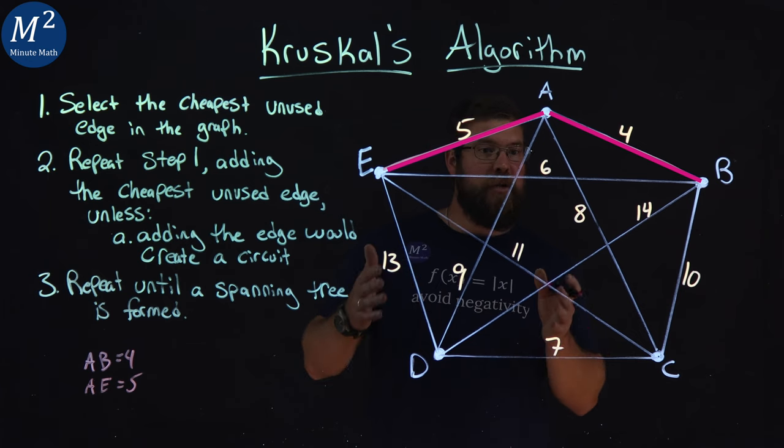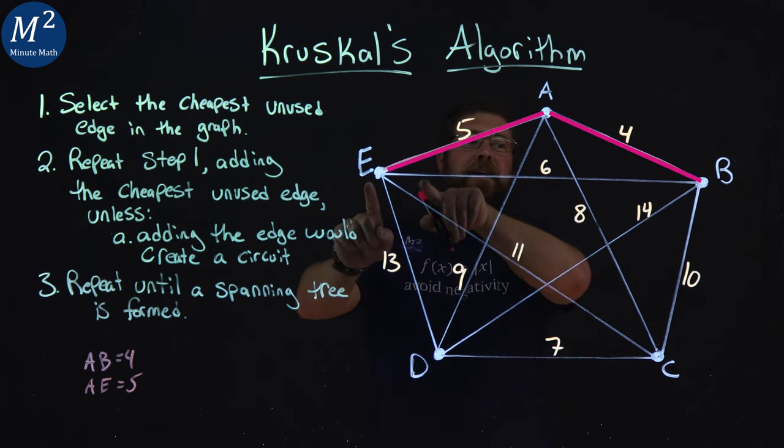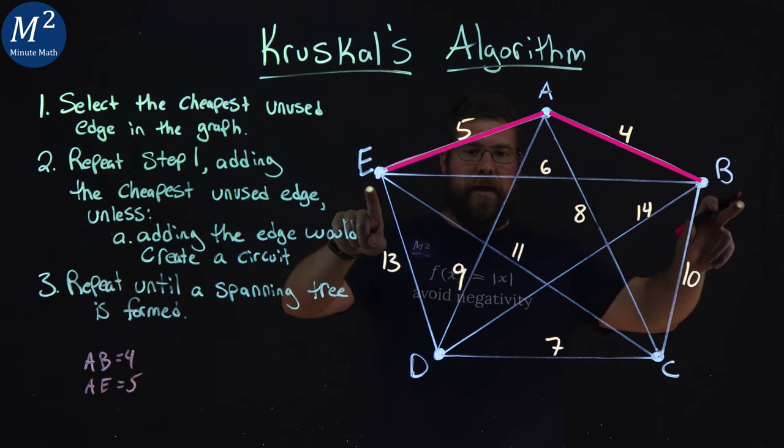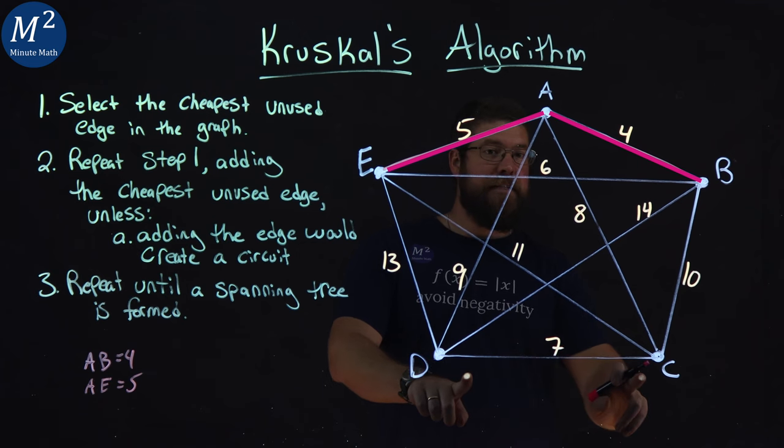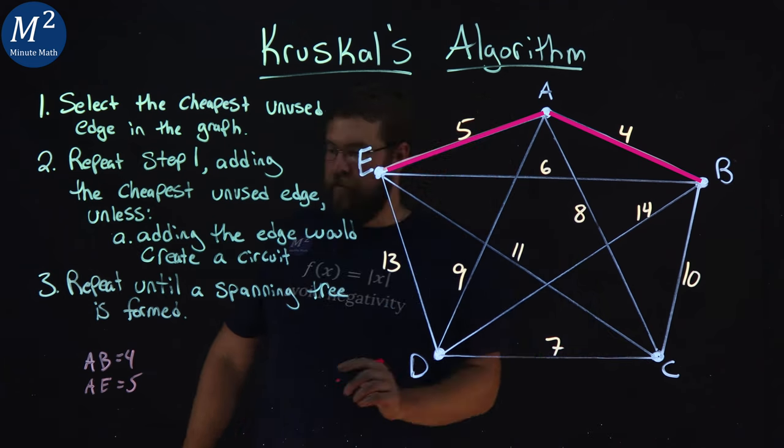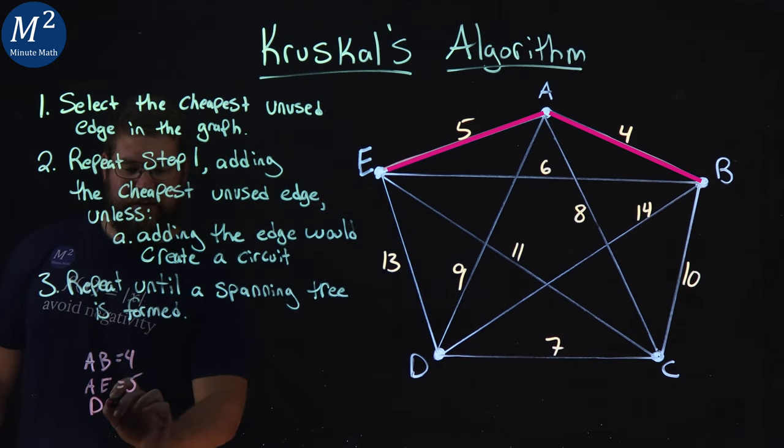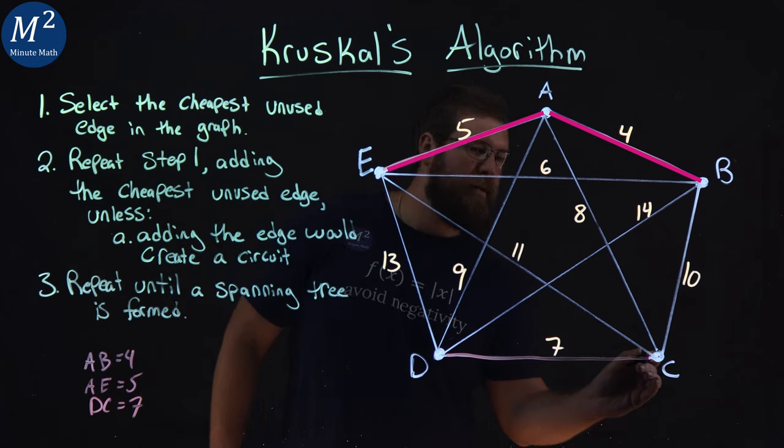Now what's the next cheapest unused edge? That would be six here, E to B, but that creates a circuit. Can't use that one. Let's go to the next one here. I see D to C or C to D, however way you want to write that. That's a seven. So D to C gives me a seven and I can highlight that here.